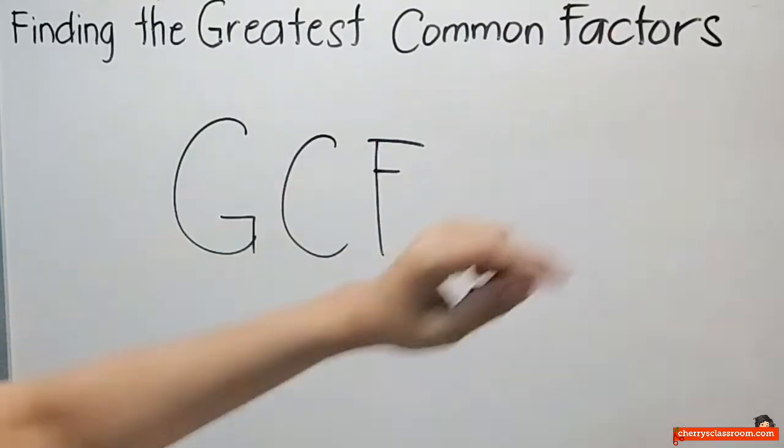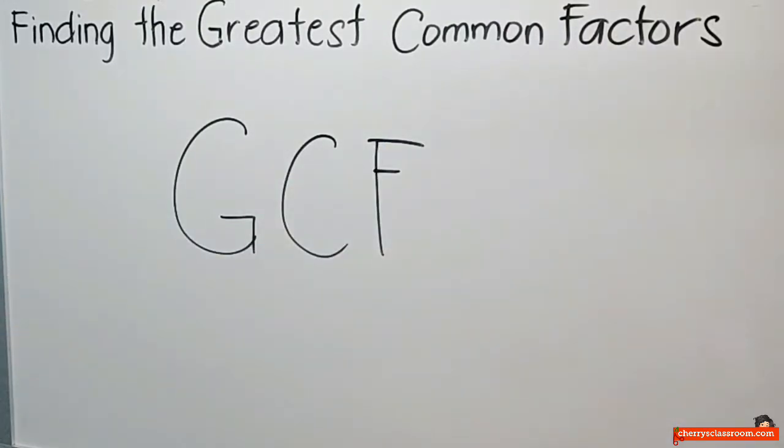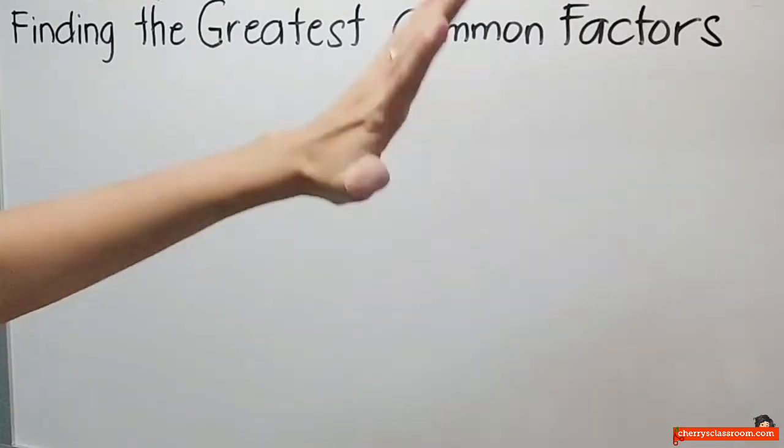Factors naman ay ang numero o number na maaari mong ipang divide. So may tatlong paraan na pwedeng gamitin sa paghahanap ng ating greatest common factors.